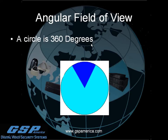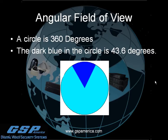A circle is 360 degrees. In the picture we're looking at, the dark blue area shown is 43.6 degrees. So you would say that this angle of view, in this particular case, is 43.6 degrees.